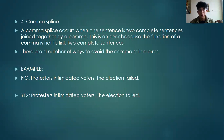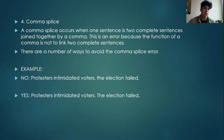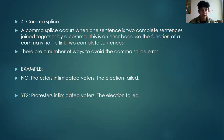Let's see the next example: the comma splice. A comma splice occurs when two complete sentences are joined together by only a comma. This is an error because the function of a comma is not to link two complete sentences. The best way to avoid the comma splice is to replace the comma with a full stop, as we can see in the example. The incorrect way: "Protesters intimidate voters, the election failed." The correct way: "Protesters intimidate voters. The election failed." With this, we have a complete sentence.